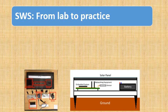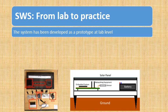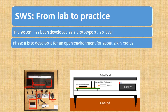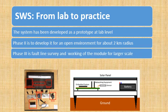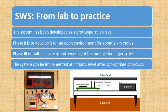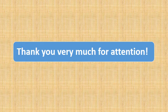Regarding the current status of the project: the system has been developed as a prototype at lab level, with images shown here. Phase two is to develop it for an open environment for about a two-kilometer radius and test it. Phase three involves fault line survey and working of the module at a larger scale. The system can be implemented at a national level after appropriate approvals from PTA, government defense authorities, and government decision makers, as it cannot be implemented by a single user.